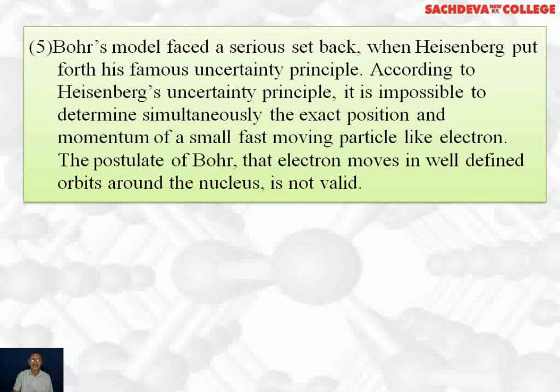Bohr model faced a serious setback when Heisenberg put forth his famous uncertainty principle. According to Heisenberg's uncertainty principle, it is impossible to determine simultaneously the exact position and momentum of small, fast-moving, subatomic particles like electrons simultaneously. This postulate of Bohr that electron moves in well-defined orbits around the nucleus is not valid after the invention of this principle.